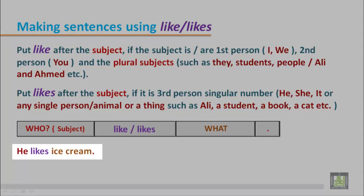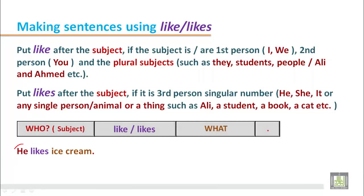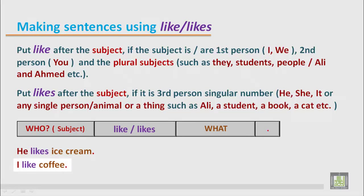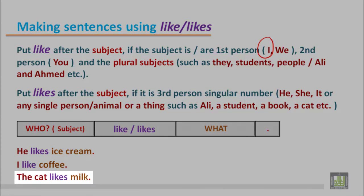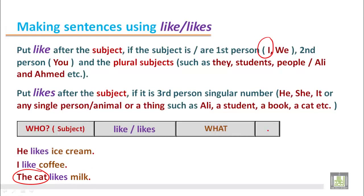Here are some examples according to the structure. 'He likes ice cream' — he is a third person singular number subject, so we use likes. 'I like coffee' — the subject is first person singular I, so we use the base form like. 'The cat likes milk' — the cat is a singular third person animal, so we choose likes after the subject.